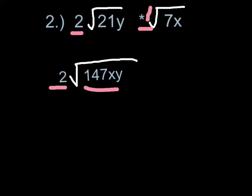But you can still simplify 147. 147 simplified would be 3 and 49, and 49 divided by 7 is 7.